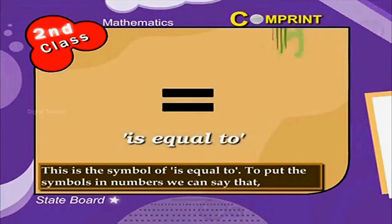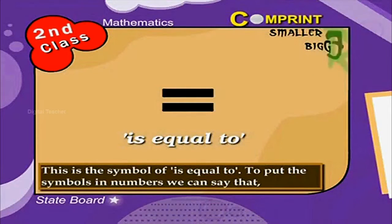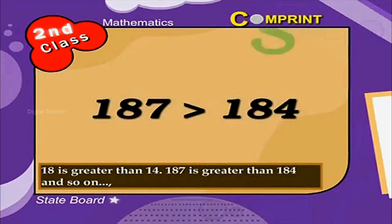This is the symbol of is equal to. To put the symbols in numbers, we can say that 18 is greater than 14, 187 is greater than 184, and so on.